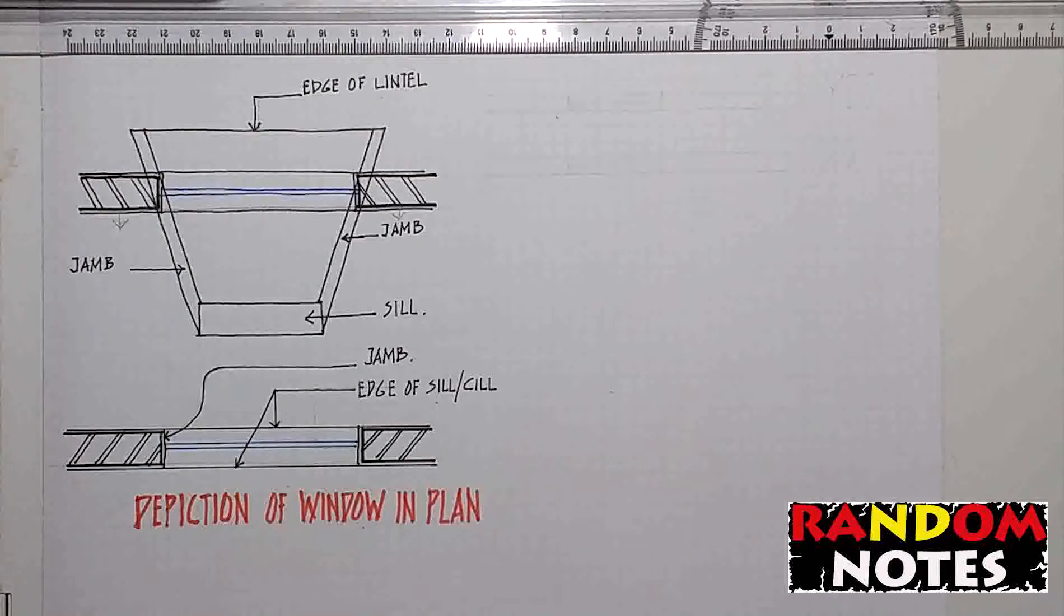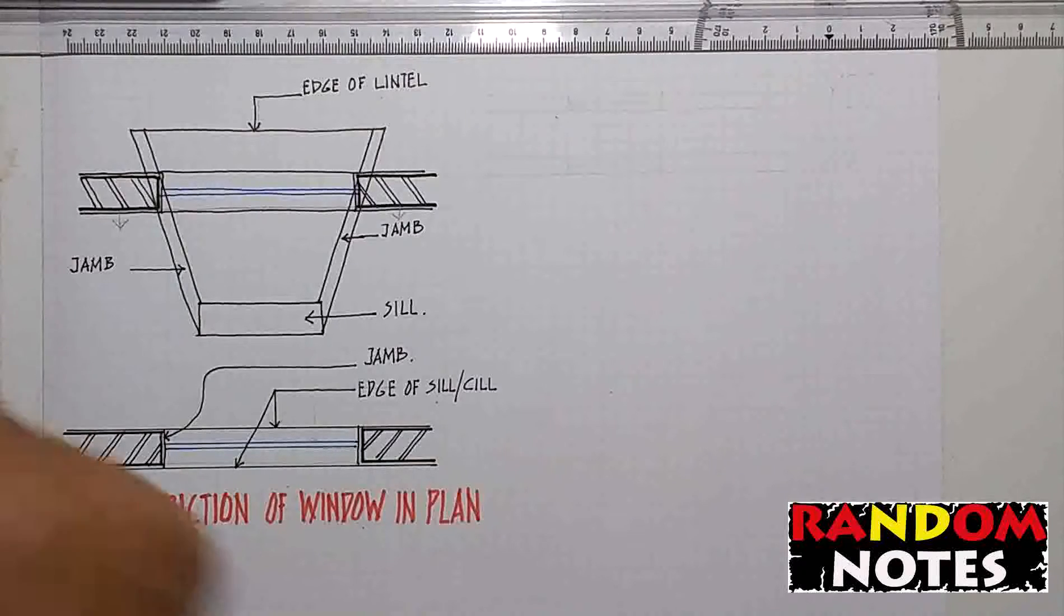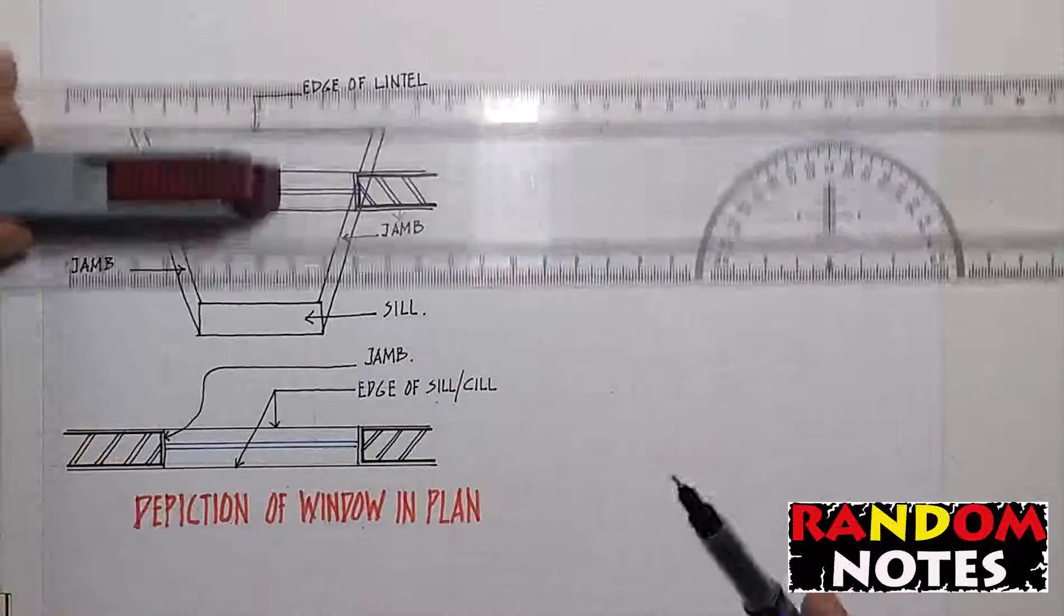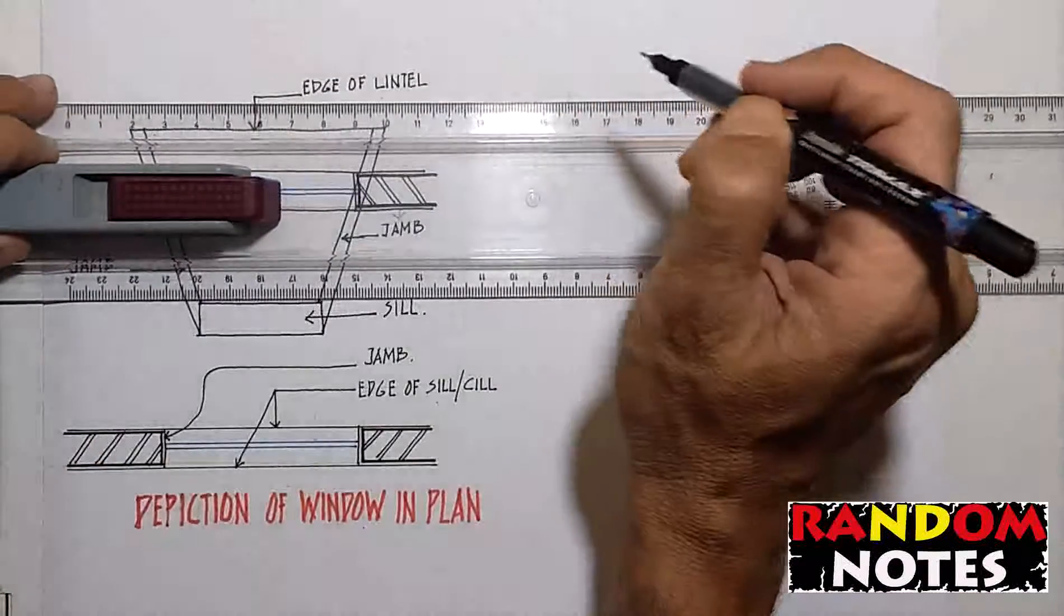It is important to use the variation in line thickness of building elements getting cut by section plane and those beyond the section plane. The following example will clarify this better.